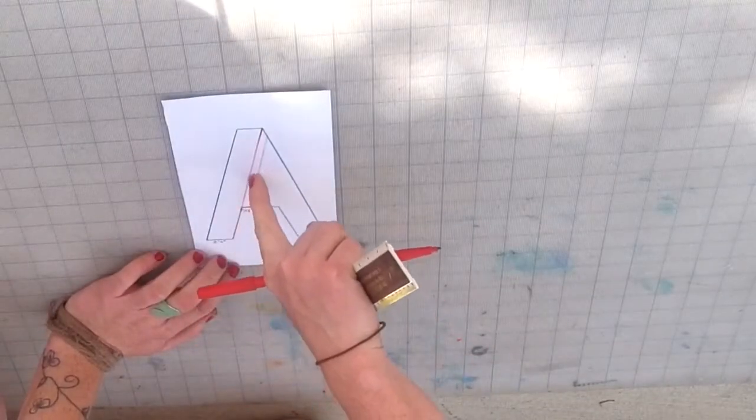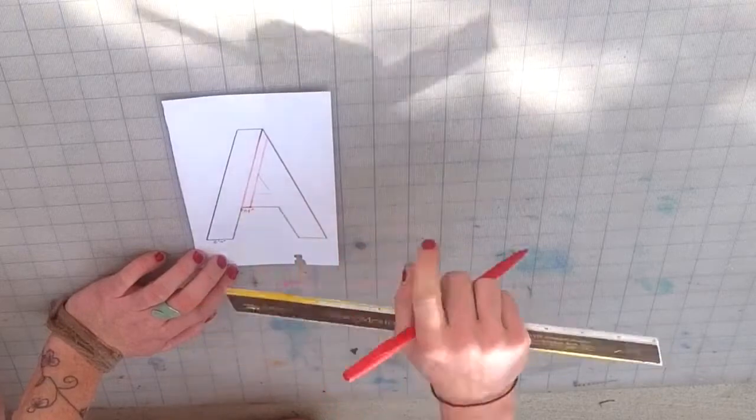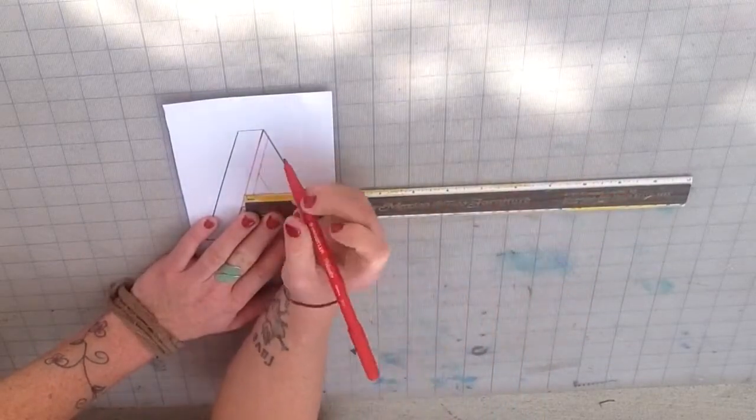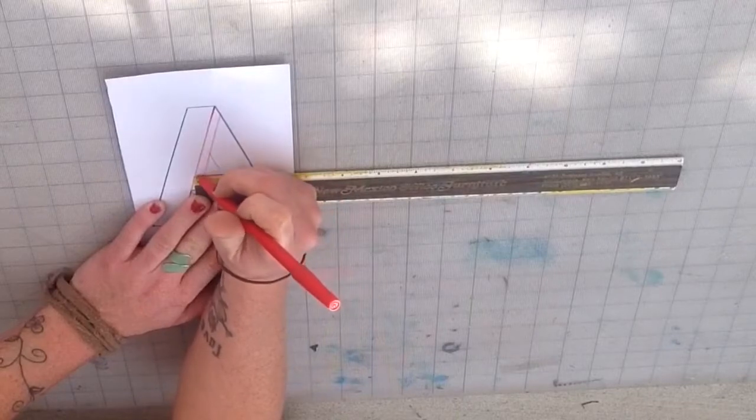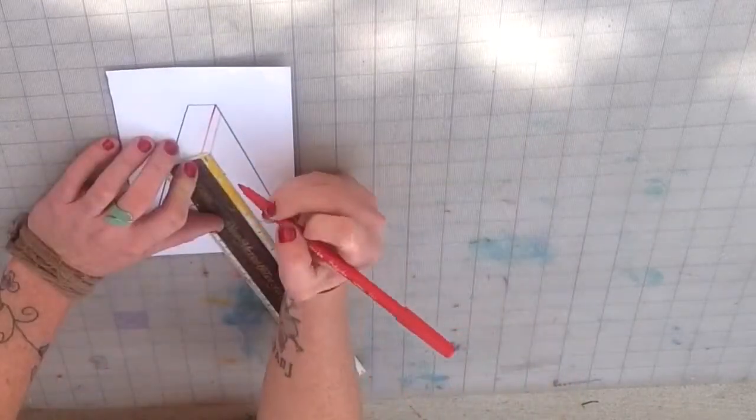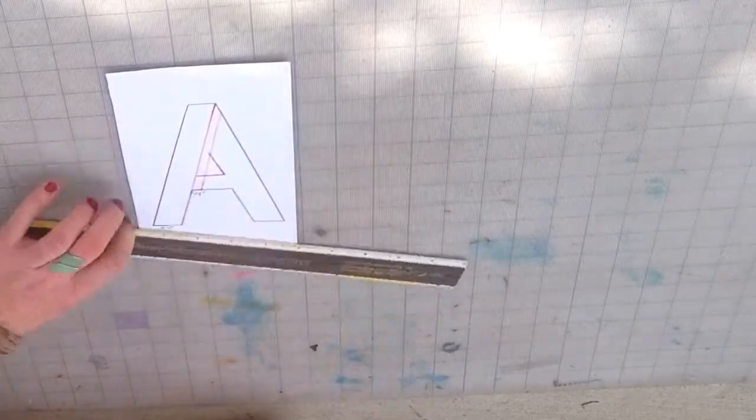From this leg over is 3 quarters of an inch, so mark that with your red pen. Finally closing the A's hole you want to draw one inch up at an angle.